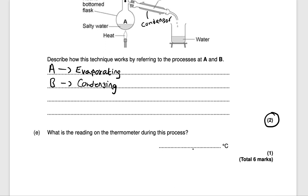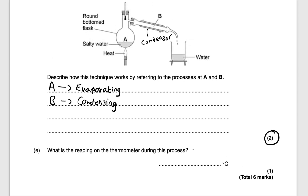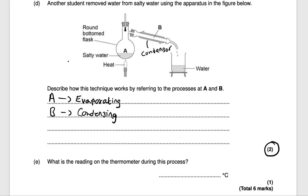The final question asks what is the reading on the thermometer during this process? We're heating the water so it evaporates and condenses — this is testing your knowledge on the boiling point of water. We're boiling the water so it evaporates, so the temperature on the thermometer is 100 degrees. That would get you one mark.